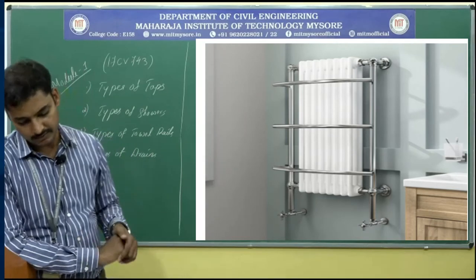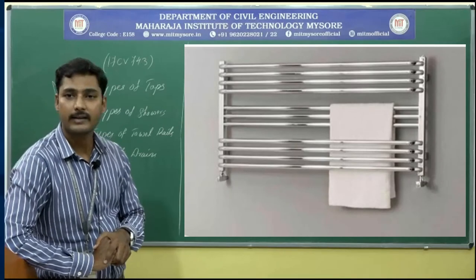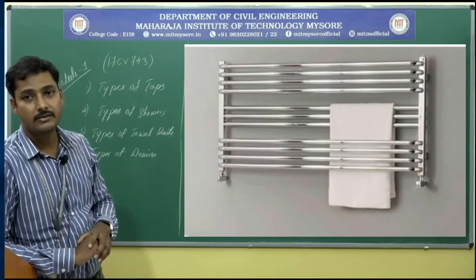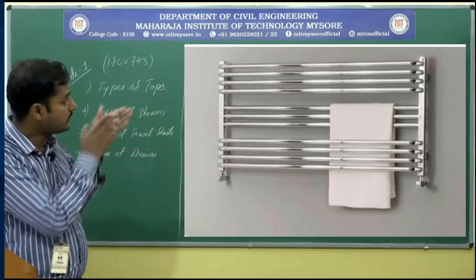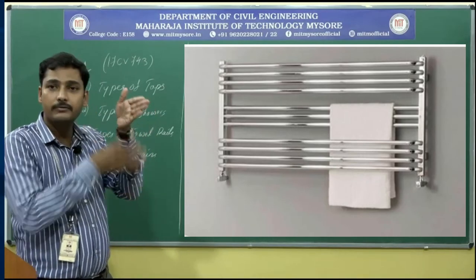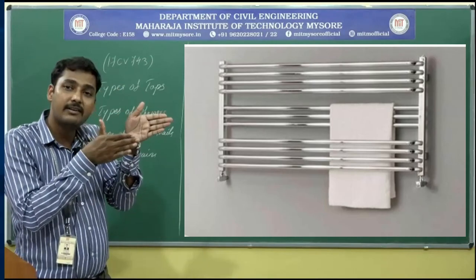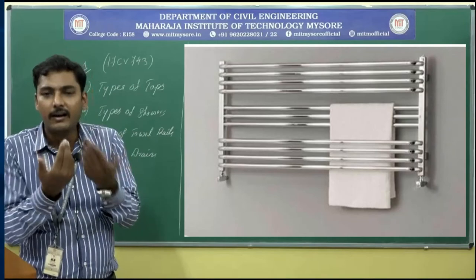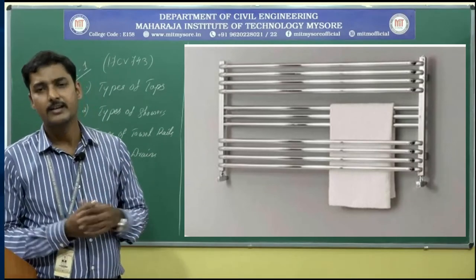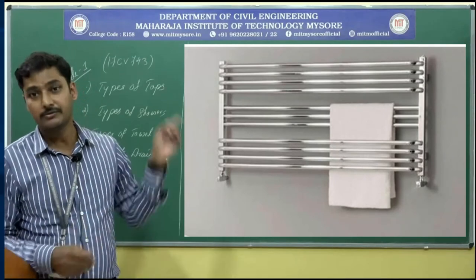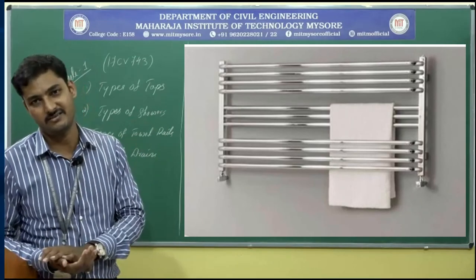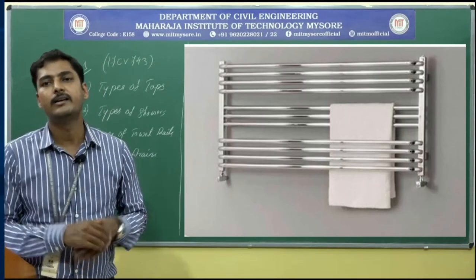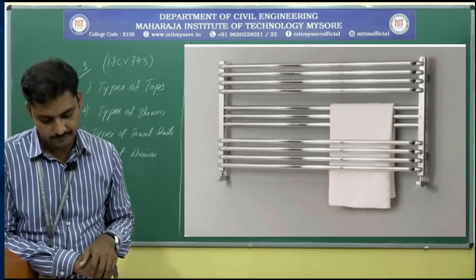The second type is heated towel rails. They have two vertical bars with horizontal strips at different levels. When heat is liberated from the connections on both sides, the towels placed on them become dry — any wetness is removed due to temperature variations. That is why they are called heated towel rails, keeping towels dry for longer durations.